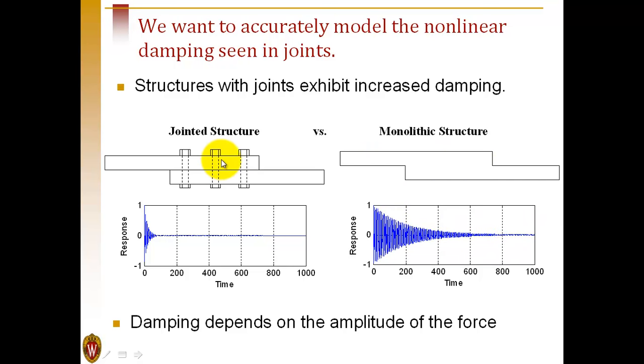Most real structures are built out of assemblies where we hold pieces together with joints, and those joints involve friction and contact at the interfaces.